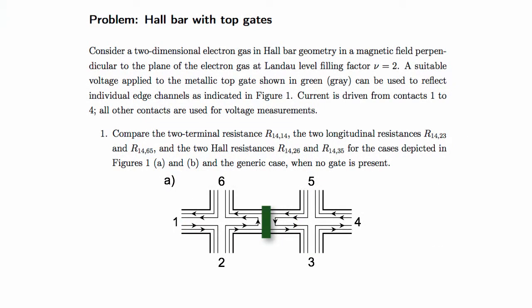In this exercise, we apply the Landauer-Büttiker formalism to a Hall bar in which a top gate, shown in green, selectively reflects edge channels. The top gate reduces the charge carrier density under it, and so reduces the effective filling factor. We assume that we have two non-degenerate modes transmitted along the edge in the bulk of the sample, and that only one mode is transmitted in the region of the top gate.